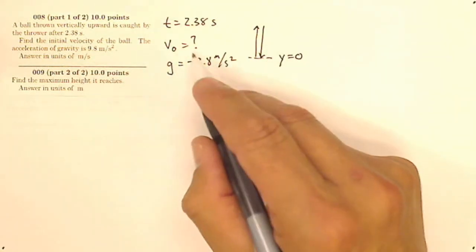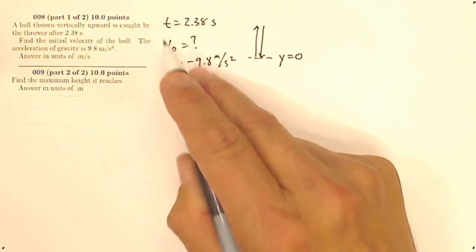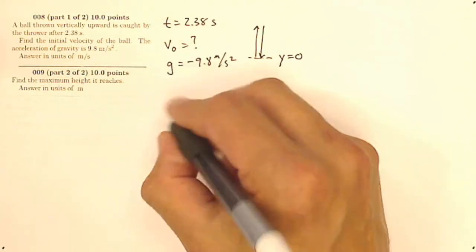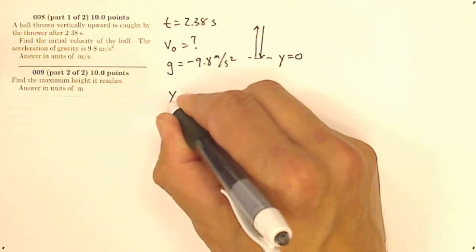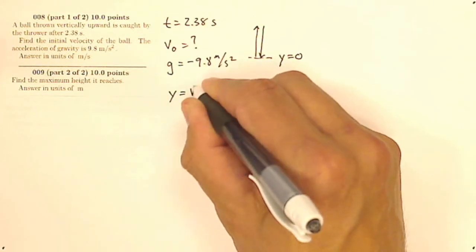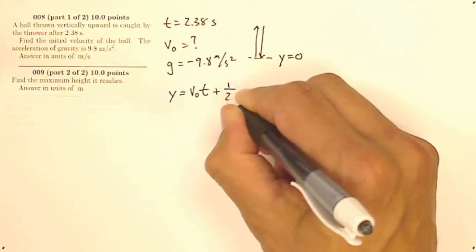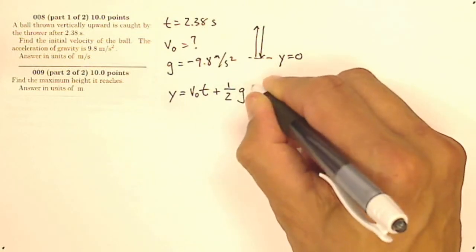So now, if I don't care about my final velocity, but I've got time, initial velocity, gravity, and displacement, and I don't care about my final velocity, what I know is that my displacement is my initial velocity times time plus 1 half my acceleration times time squared.